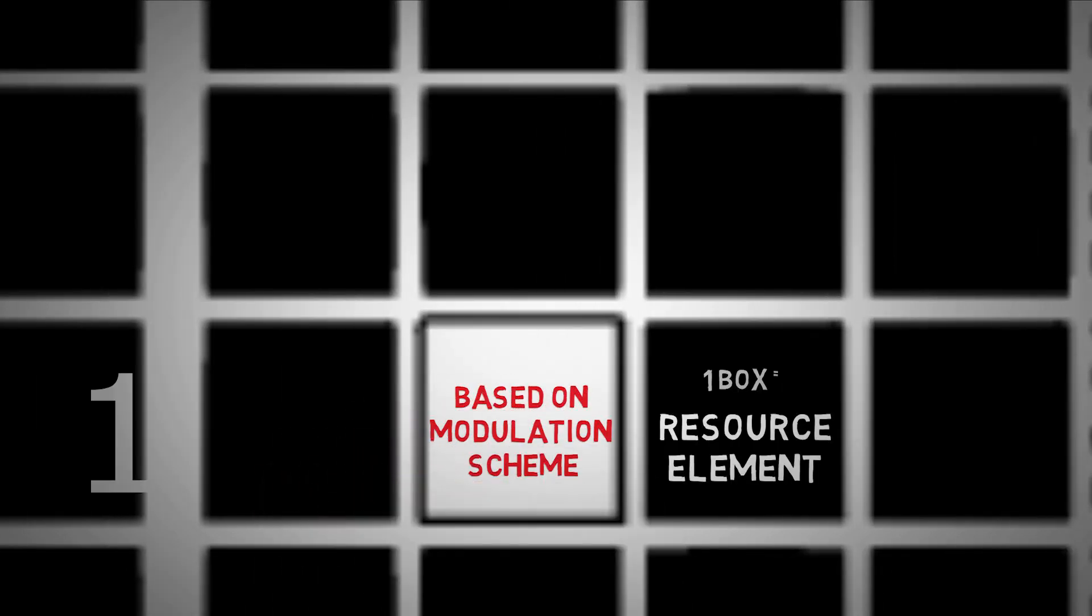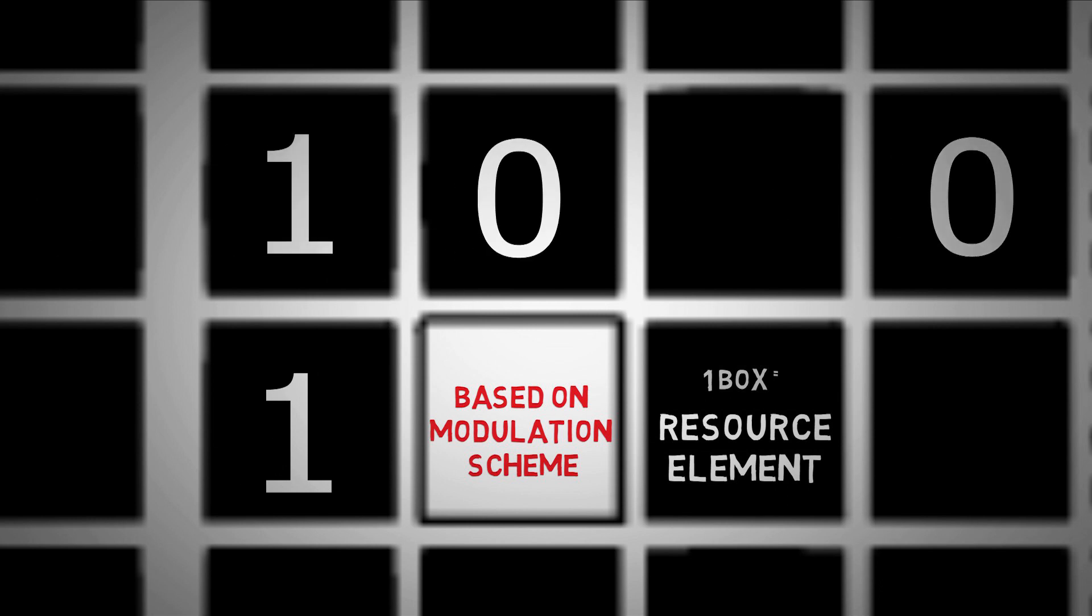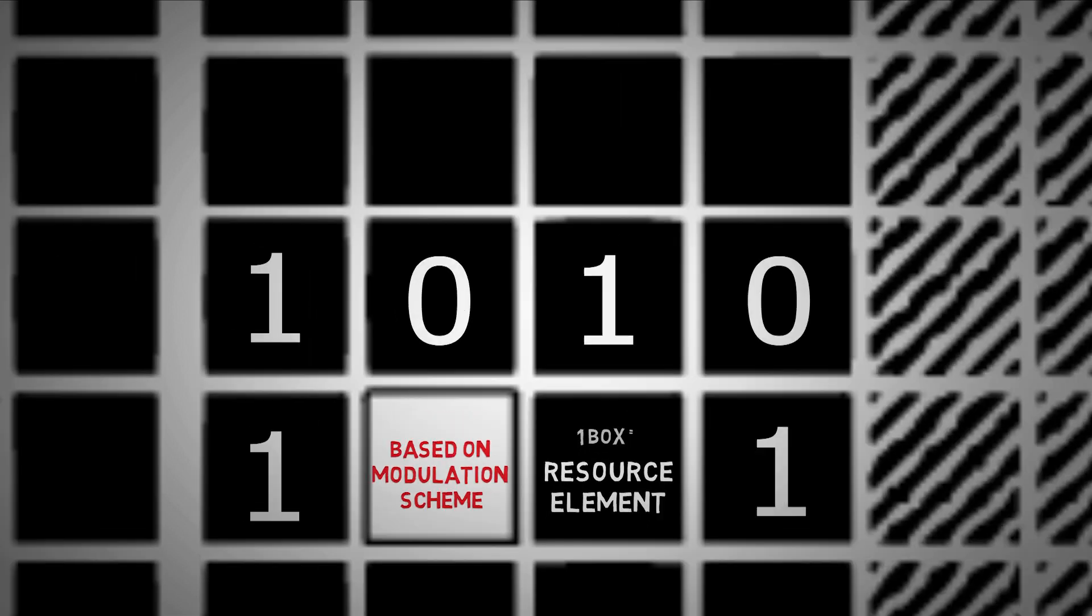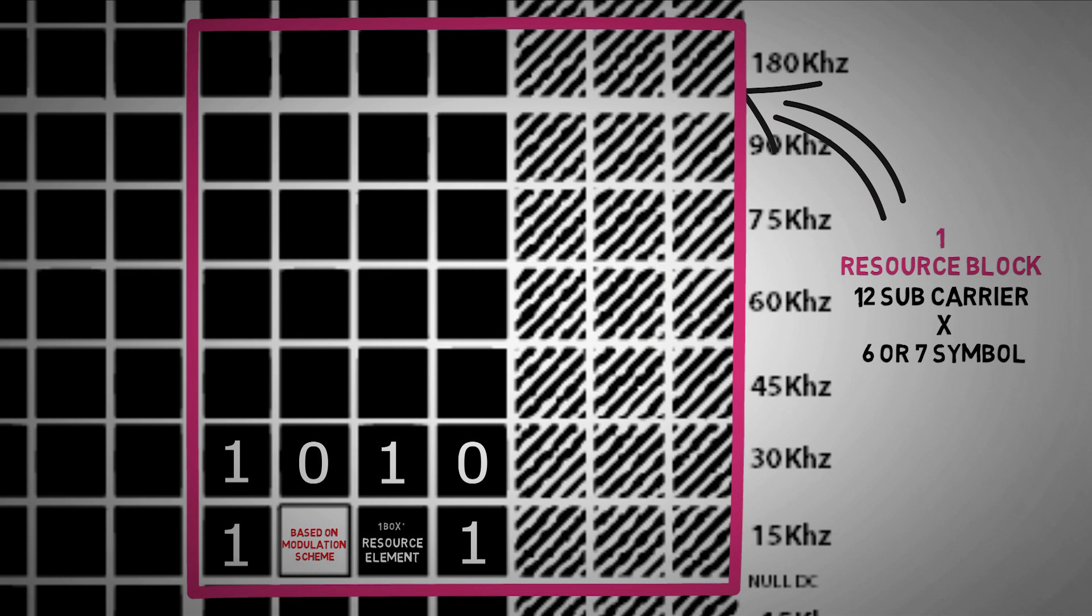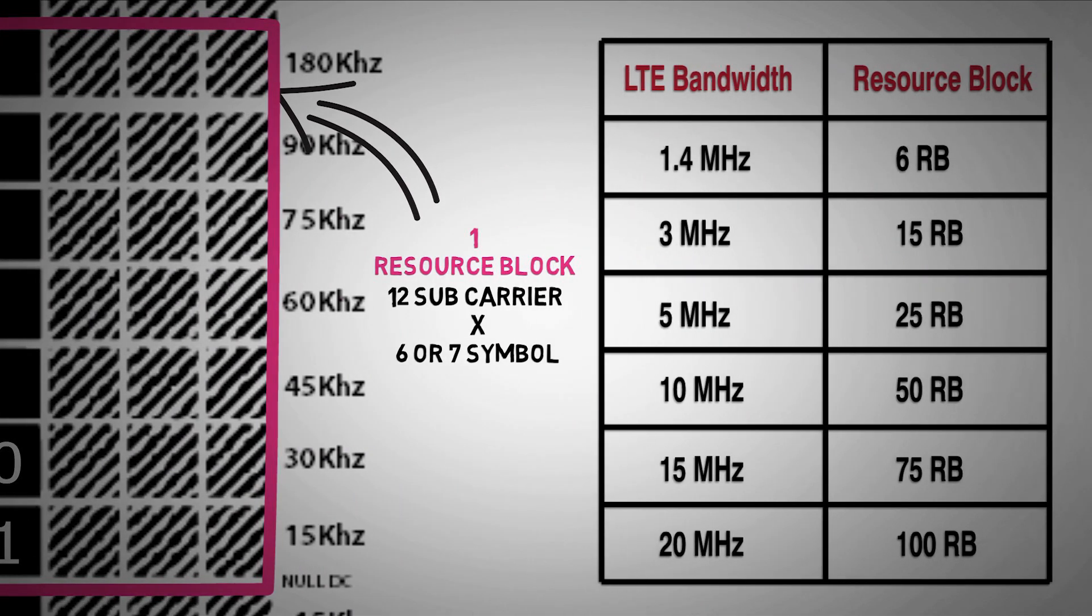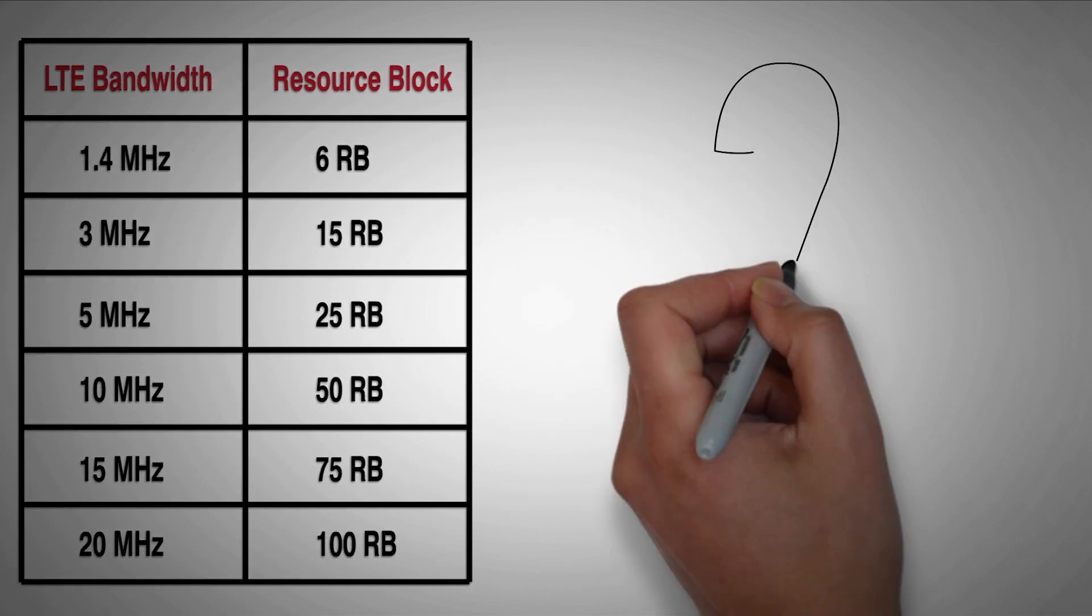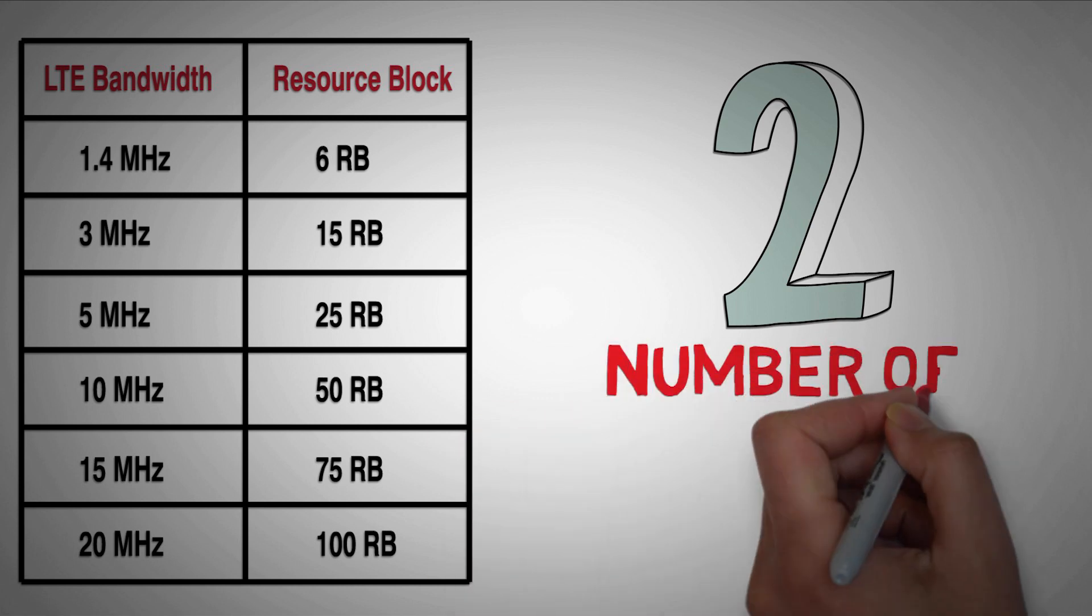Based on the modulation scheme, bits are mapped on the resource element. These resource elements aggregate into the resource block. In LTE we can have variable bandwidth, and higher bandwidth means more resource blocks. So the second factor is the number of resource blocks used.